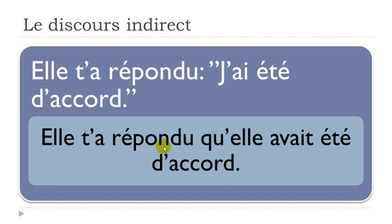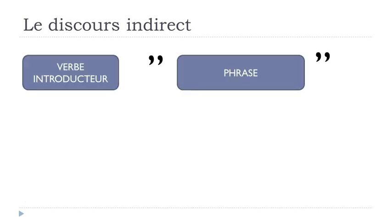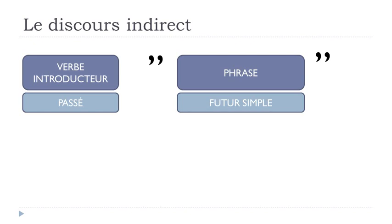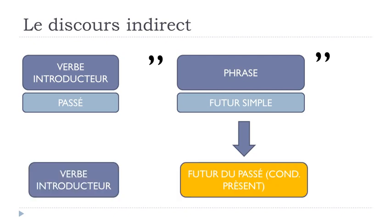Remember: the first part doesn't change. The second part: passé composé becomes plus-que-parfait. Now, if we have the futur simple in the second part: elle t'a répondu, je serais d'accord. This futur simple will change and become what we call futur du passé — technically it's the conditionnel présent. So: elle t'a répondu qu'elle serait d'accord. Keep in mind this serait form is the conditionnel présent.